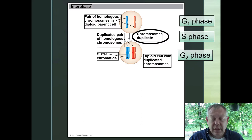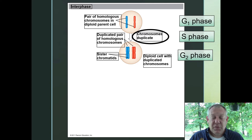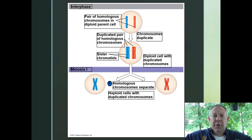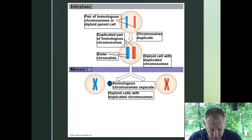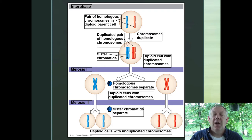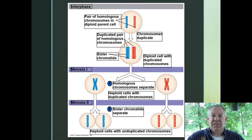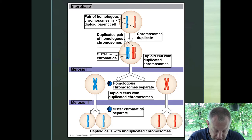In interphase you've got the first gap phase, then the S phase when chromosomes are duplicated, then the second gap phase. Then we go into meiosis I, where we're separating those homologous pairs. In this example you only have one homologous pair and it gets split — they each get partitioned into a different cell. Then each of those cells goes through the whole procedure again — that's called meiosis II. This time we rip apart those sister chromatids, just as we did in mitosis. We end up with four cells and each of those cells is going to be unique.